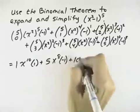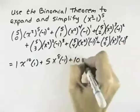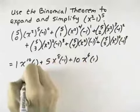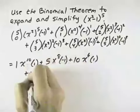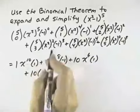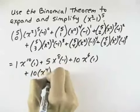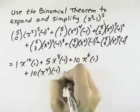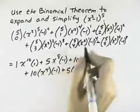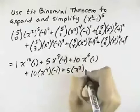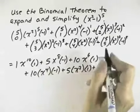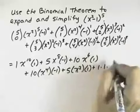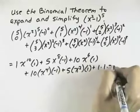C(5,2) is 10. x squared to the third is x to the sixth. Negative 1 to the second is 1. C(5,3) is 10. x squared squared is x to the fourth. Negative 1 to the third is negative 1. C(5,4) is 5. x squared to the first is x squared. Negative 1 to the fourth is positive 1. C(5,5) is 1. x squared to the zero is 1. And negative 1 to the fifth is negative 1.